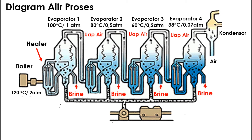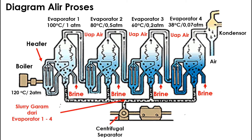Seluri garam yang tadi dialirkan ke bawah evaporator, dari evaporator 1 sampai evaporator 4, diumpankan menuju ke centrifugal separator. Di sini, seluri garam dipisahkan dari pengotor dengan cara dipusingkan. Dari centrifugal separator ini diperoleh biton, yaitu air sisa kristalisasi yang banyak mengandung garam magnesium dan rasanya pahit.